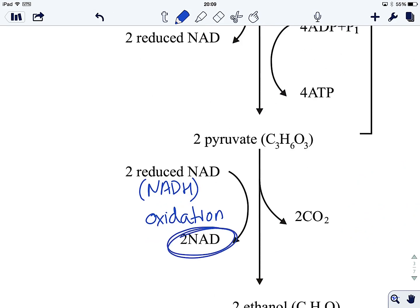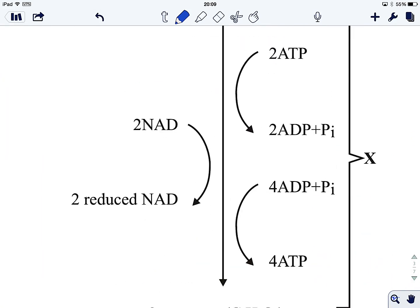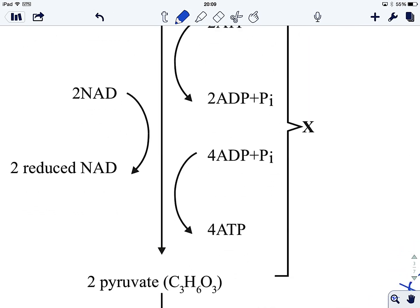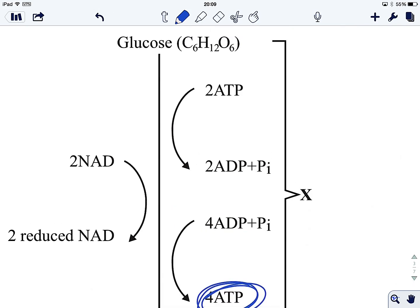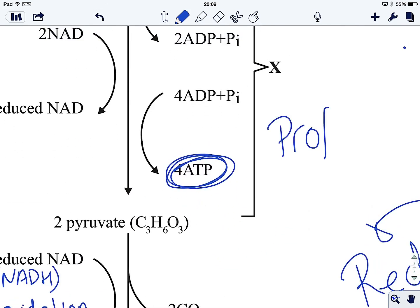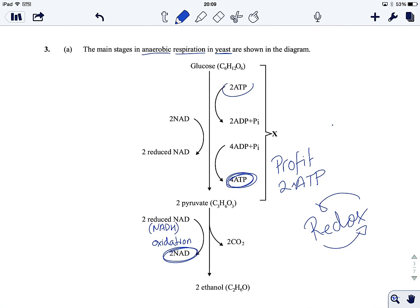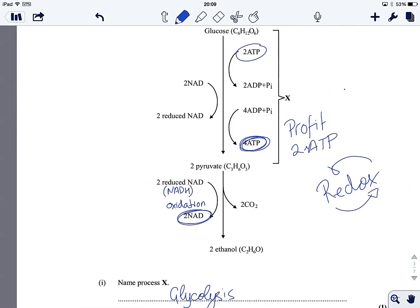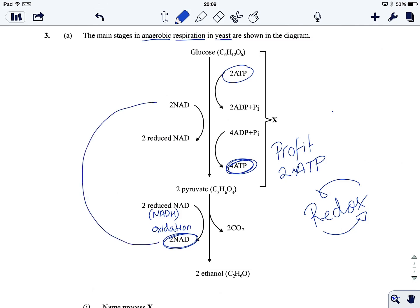Explain why converting pyruvate to ethanol is important in allowing the continued production of ATP. Let's go back to our diagram. Once again, we're going to be concentrating on NAD. We need NAD up here. We need NAD to be reduced, to allow glucose to be oxidised to pyruvate, which yields us 4 ATP from an investment of 2. We get a profit of 2 ATP, which is great.